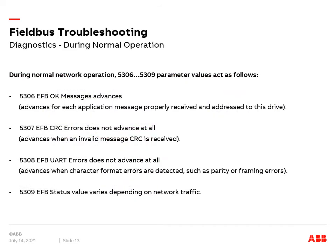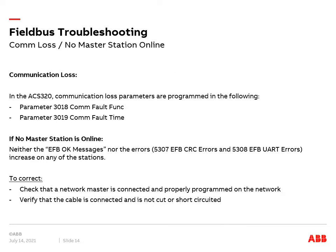When troubleshooting field bus communications, it helps to know what signals the VFD and field bus connections make available and how those should normally operate. We can look at these signals in parameter group 53 inside the VFD. In the ACS-320, communication loss parameters are programmed in parameter 3018 comfault function and parameter 3019 comfault time.